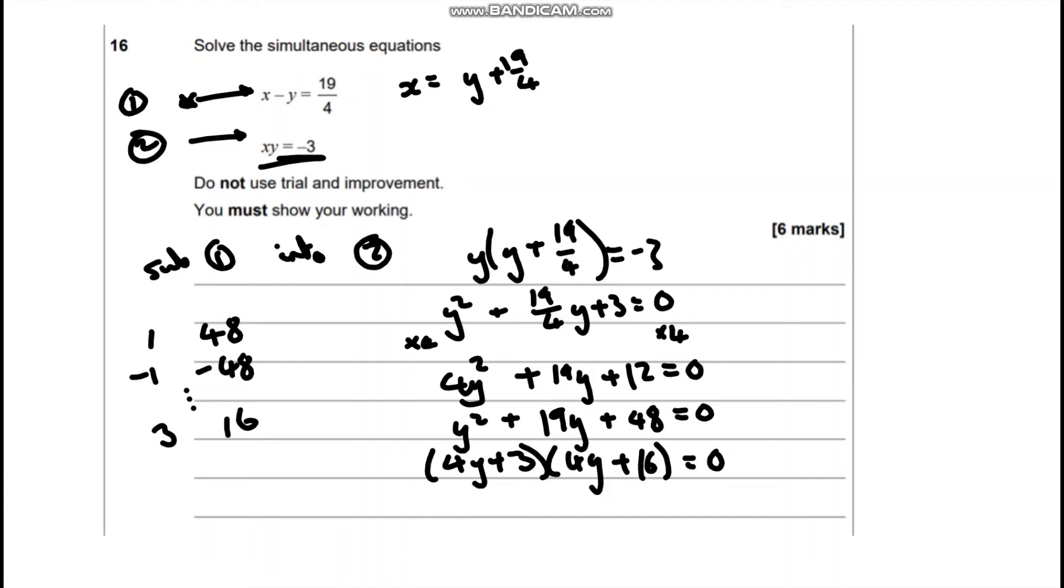Now as I've multiplied by 4, I'm going to have to divide either one of these brackets by 4 or both of these brackets by 2. Straight away I can see the right-hand bracket we can divide by 4. So we're going to end up with (4y plus 3)(y plus 4) equals 0.